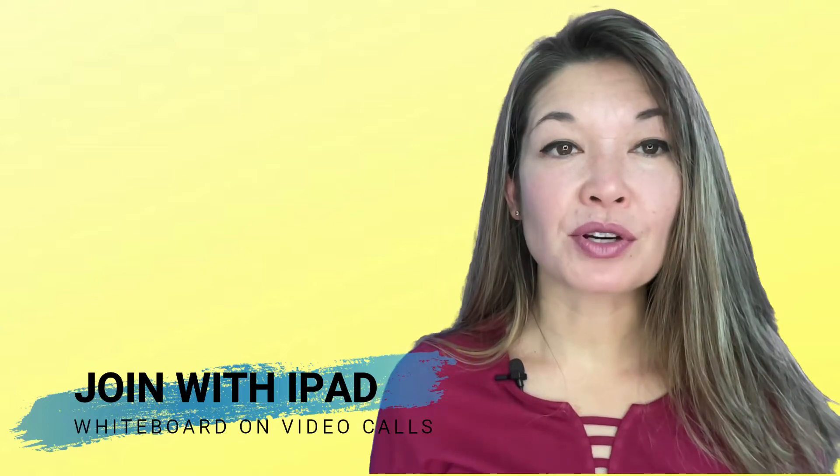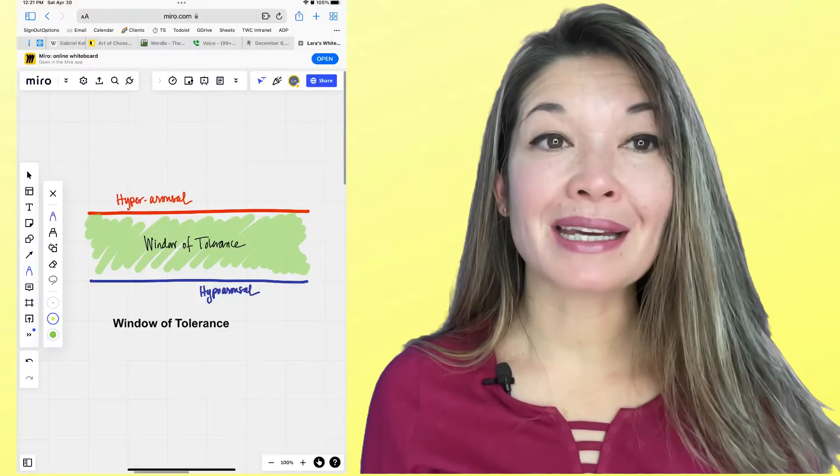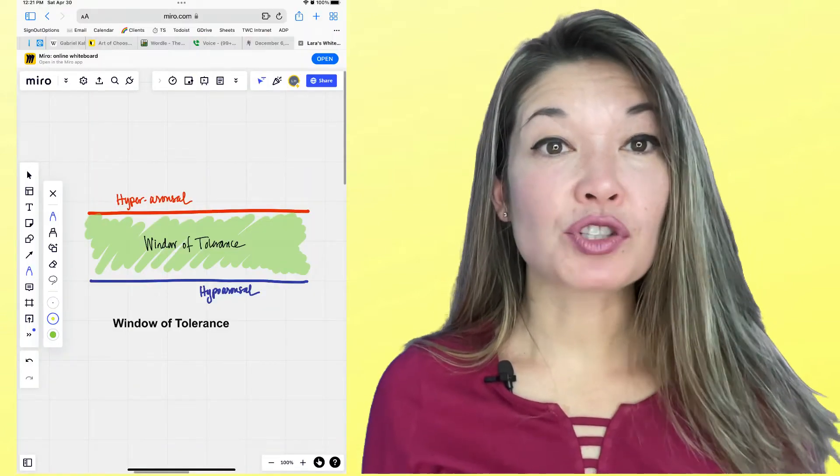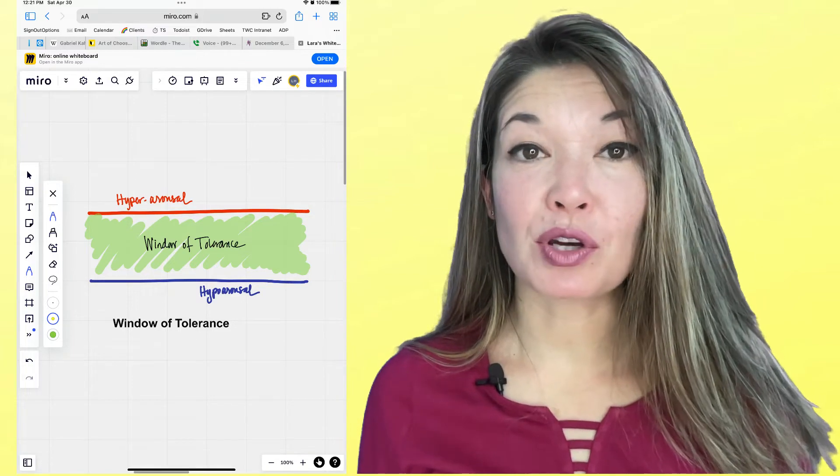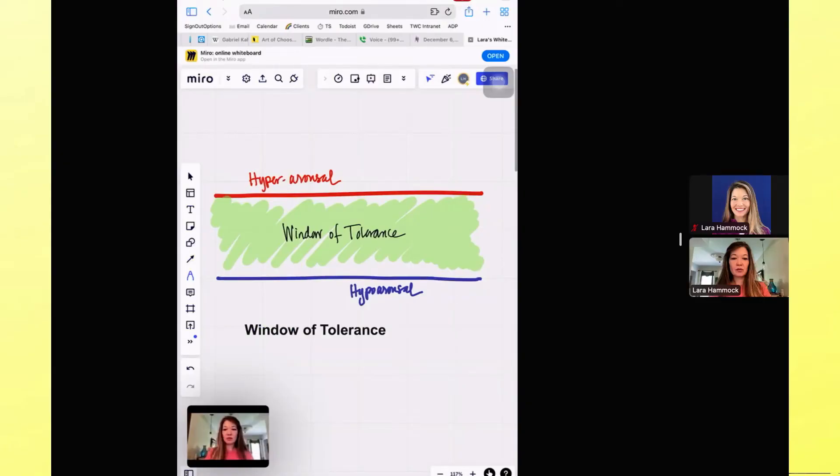Then I can go to a browser, log into Miro.com and share my screen. Of course, sharing privileges for participants have to be turned on by the host. Then I can draw my whiteboard and everything I do can be seen by everyone on the Zoom.